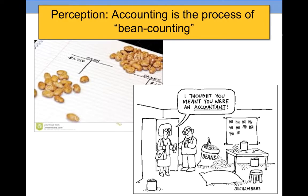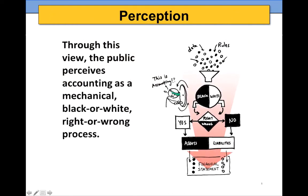If we ask a person on the street about accounting, often they think accounting is just black and white. We still have that perception that accounting is the process of bean counting — that you're literally sitting here counting beans. It's a view that accounting is very mechanical: we use data, there are rules, right and wrong answers, and we have assets, liabilities, and produce financial statements. The public often views accounting as a mechanical, black-or-white, right-or-wrong process.